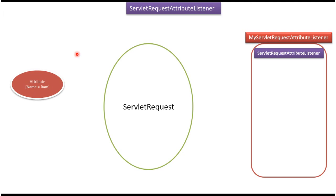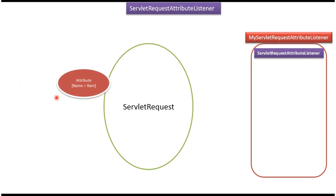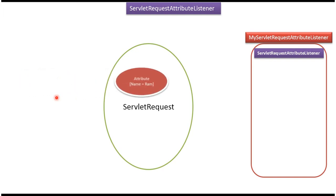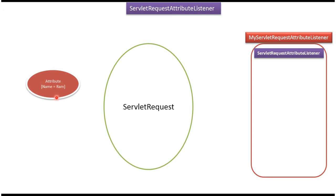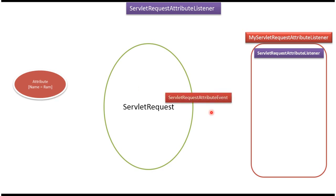In this video tutorial I will cover ServletRequest attribute listener introduction. On the left side you can see the attribute name equal to 'ram'. So whenever the attribute is added to the ServletRequest, or the attribute is removed from the ServletRequest, or the attribute is replaced with some other value, then a event will be created. The event is called ServletRequestAttributeEvent. So this event we can listen using a listener.